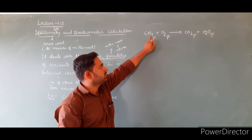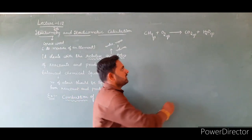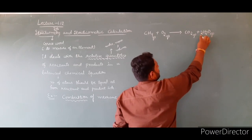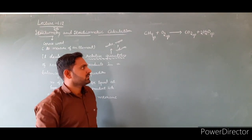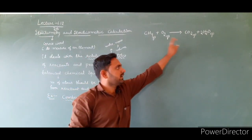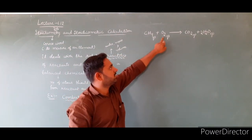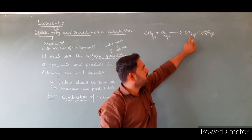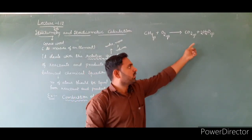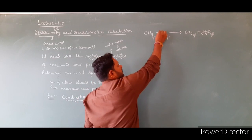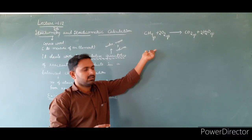Next, balance oxygen. On the reactant side there are two oxygens; on the product side there are now four oxygens (2 from CO2 and 2 from 2H2O). To balance oxygen, put a coefficient of 2 before O2. Now the equation is balanced: CH4 + 2O2 → CO2 + 2H2O.